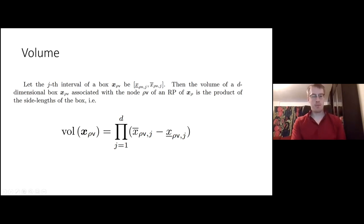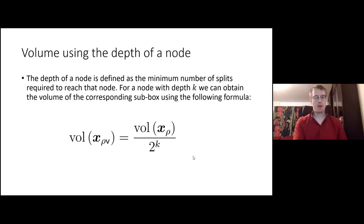So if you want the volume of a sub box, the regular way works. We just take the largest point of the interval, subtract the smallest points, then we get the length of a side. We multiply that side by all the other sides. That's the standard way to do it. We could also use the depth of a node to calculate the volume. The depth of a node is the minimum number of splits to reach that node. Once we have the depth, we can use that in the formula. First we take the volume of the root node, divide it by two raised to the power of the depth of the node corresponding to the sub box where we want the volume.